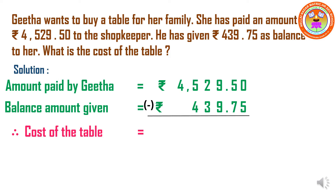Now on subtracting, we take the ones place. 0 minus 5 — 0 is smaller than 5, so we are going to borrow from the previous number. But here 5 minus 7, where 5 is again smaller than 7, so we are going to borrow from 9. First we borrow from 9, so 9 becomes 8, and 5 becomes 15. But we want one more number for 0, so 15 becomes 14, and 0 becomes 10. Now subtract 10 minus 5, which is 5. Next, 14 minus 7 is 7.